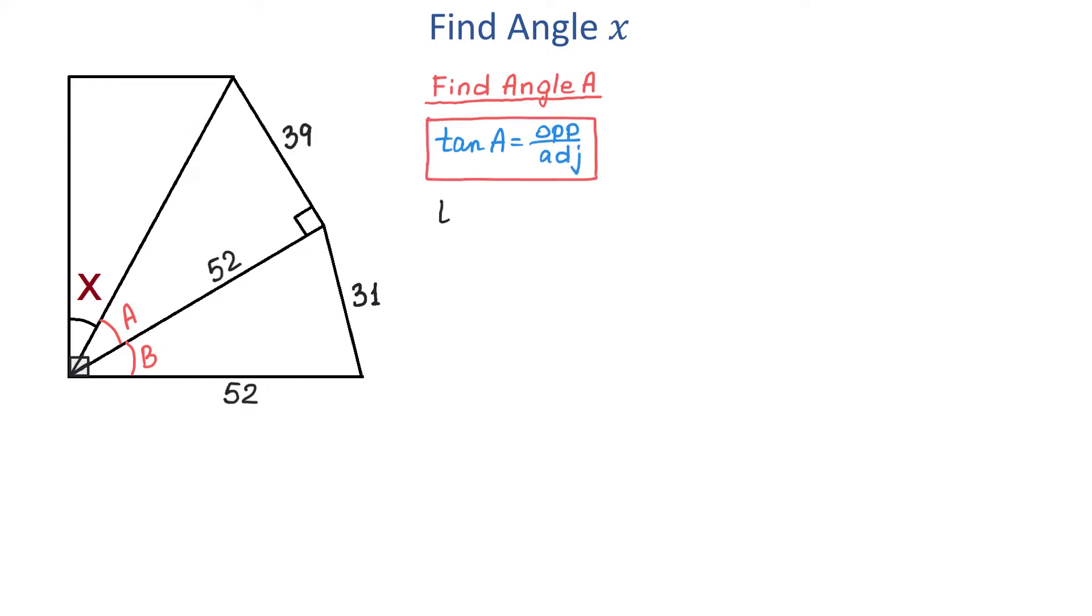Then in this formula we will replace the opposite side with 39 and the adjacent side with 52. Then angle A equals tangent inverse of 39 divided by 52. Using a calculator, A is approximately 36.87 degrees.